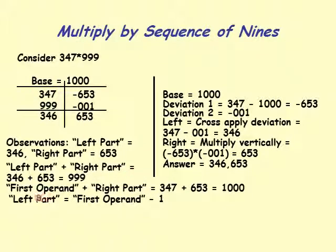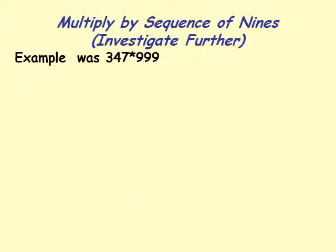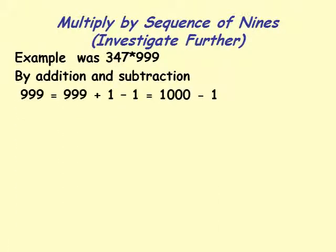So the left part of the answer is the first operand minus 1: the left part is 346 and the first operand was 347. We can also verify by algebra: 999 equals 1000 minus 1, so 347 times 999 equals 347 times (1000 minus 1).